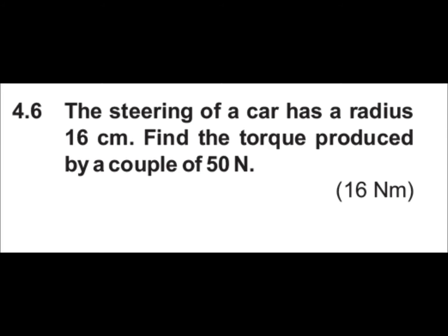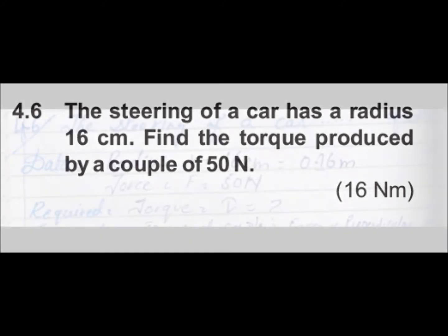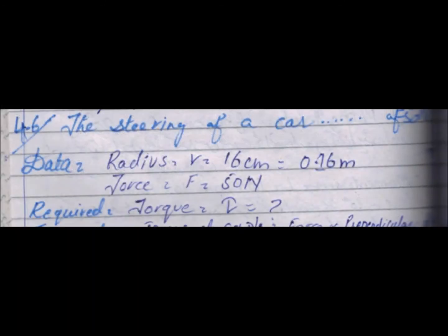So we have to find the torque. First, let's see what data is given. There is a radius. We denote the radius as small r. r is equal to 16 cm. We do not need cm, so we divide by 100. It will be 0.16 m.